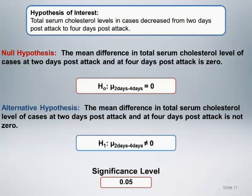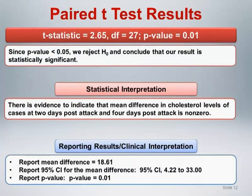The hypothesis of interest is that total serum cholesterol levels in cases decreased from two days to four days post-attack. The null hypothesis is that the mean difference in total serum cholesterol levels at two days and four days post-attack is zero, versus the alternative that the mean difference is not zero. The t-statistic is 2.65 with 27 degrees of freedom, generating a p-value of 0.01, a statistically significant result. We report the mean difference of 18.61, a 95% confidence interval from 4.22 to 33.00, and the p-value of 0.01.